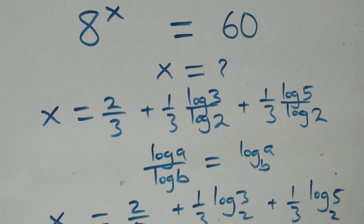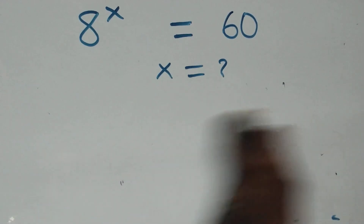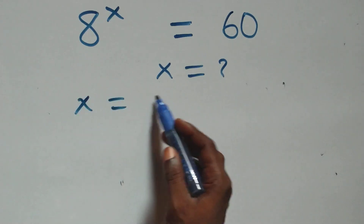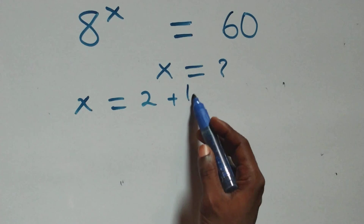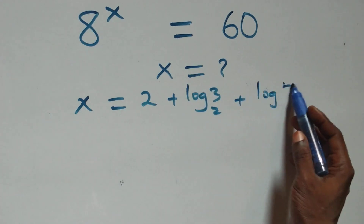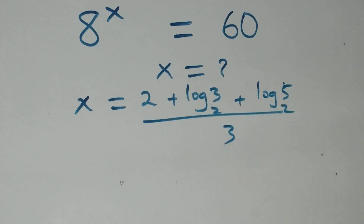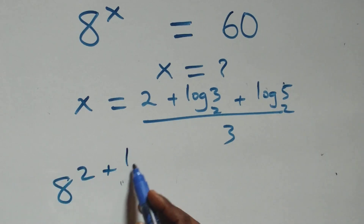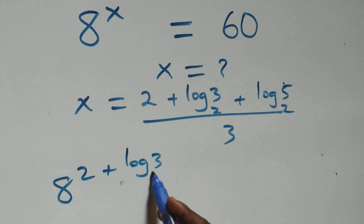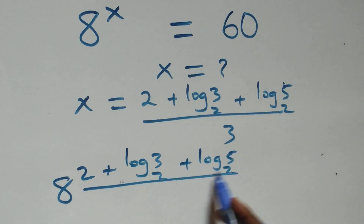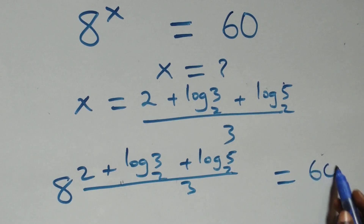We substitute the value of x, which is (2 plus log 3 base 2 plus log 5 base 2) all over 3, back into the equation. So we check whether 8 raised to power (2 plus log 3 base 2 plus log 5 base 2) all over 3 equals 60.